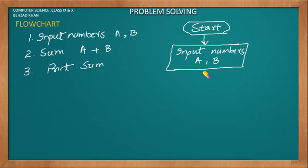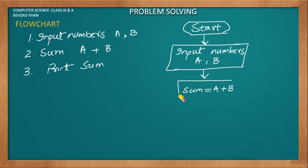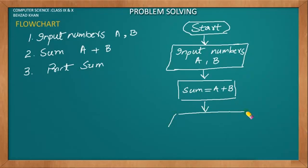After that, we sum the numbers. We use a rectangle and write: sum = a + b. Then for the next box we will do: print sum.